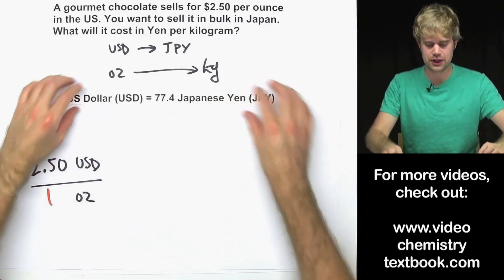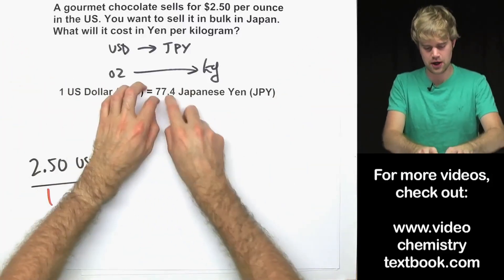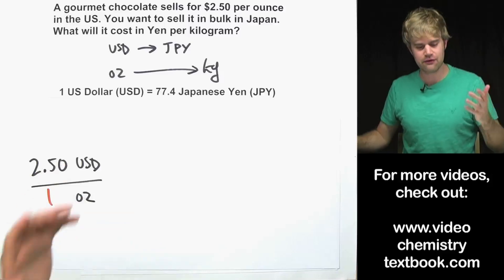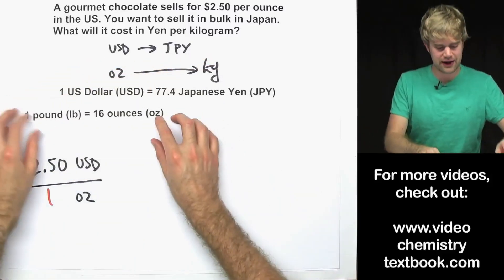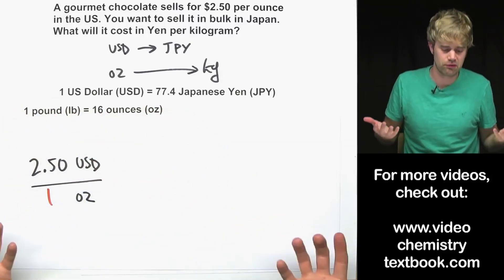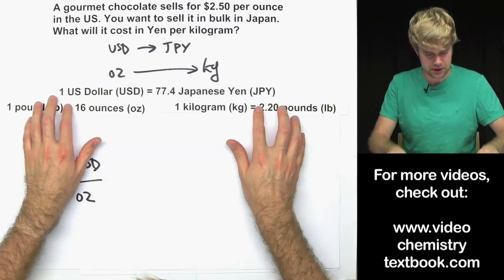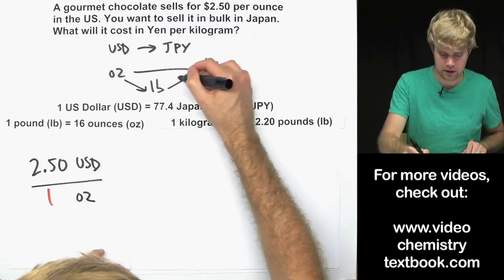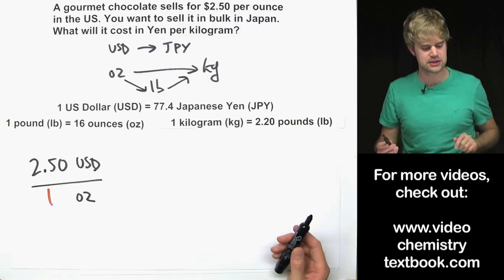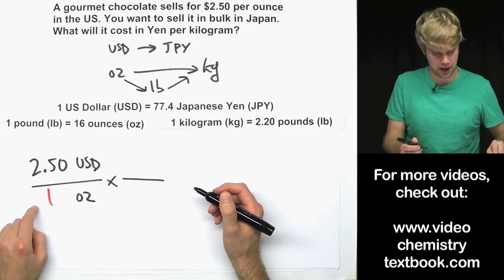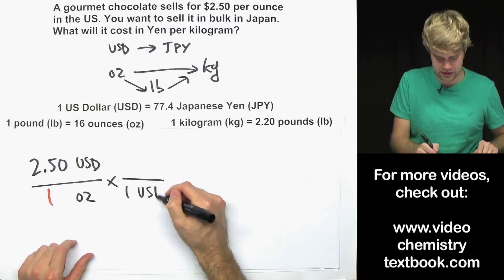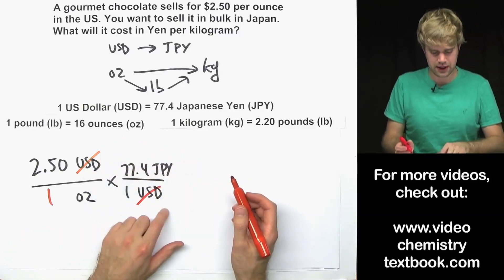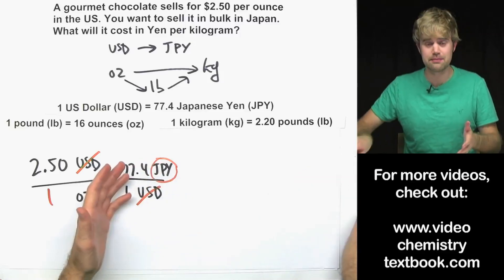The exchange rate changes daily, but on the day of this video one US dollar equals 77.4 Japanese Yen. For ounces to kilograms, let's say you can only find conversions from ounces to pounds and then pounds to kilograms — so we'll go through pounds as an intermediate step. First, let's get rid of US dollars: put 1 USD on the bottom and 77.4 Japanese Yen on the top. US dollars cancel, Japanese Yen ends up on top — I'll circle it because that's what we want.